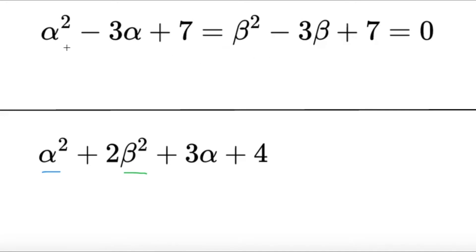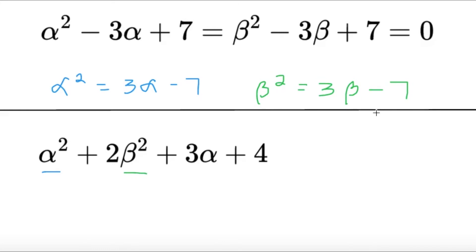Now, I can get what alpha squared and beta squared are, respectively. I know that I can write alpha squared as 3 alpha minus 7, since I know that alpha squared minus 3 alpha plus 7 equals 0. Similarly, for beta squared, I know that beta squared can also be written as 3 beta minus 7. So, all I have to do is replace alpha squared by 3 alpha minus 7 and beta squared by 3 beta minus 7, and this will be the result.